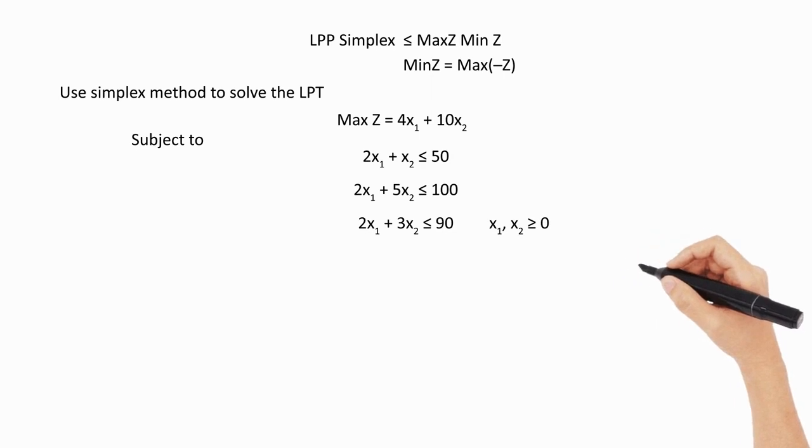This is the given question. Our objective first is to check whether the question is max or min. In the second step, we have to check the constraints whether we have all the constraints as less than or equal to type, so that means this is a normal simplex method and easy to solve. Just follow the algorithm of simplex method to attain the initial basic feasible solution.